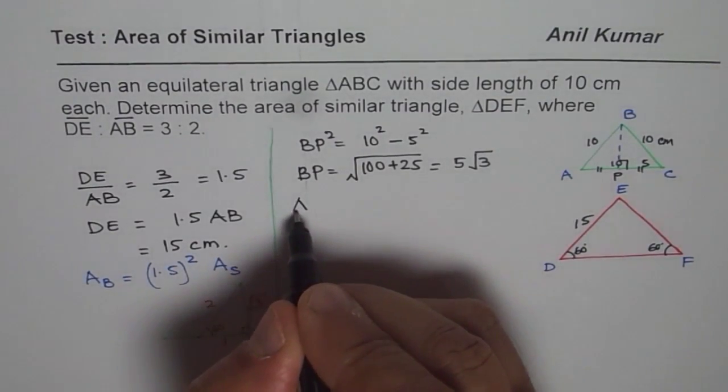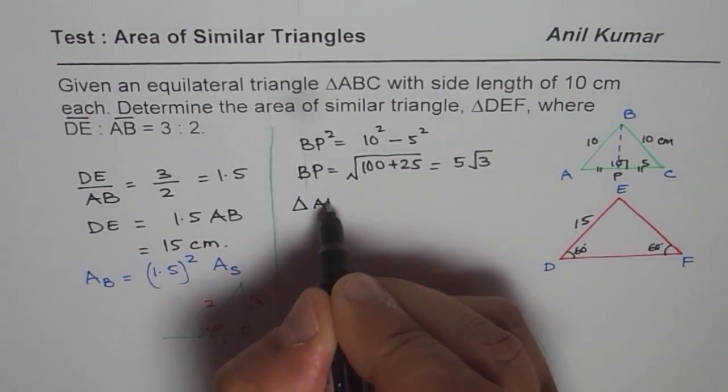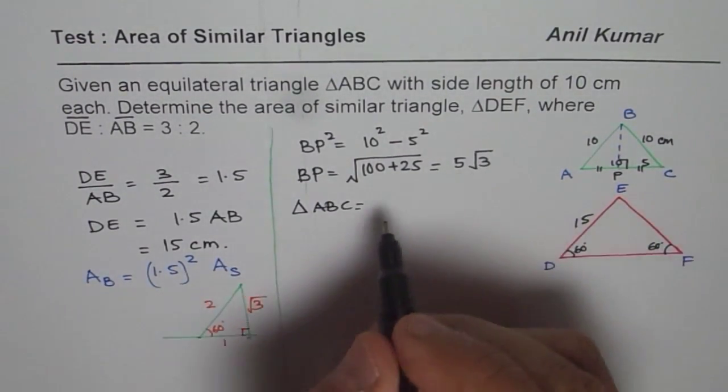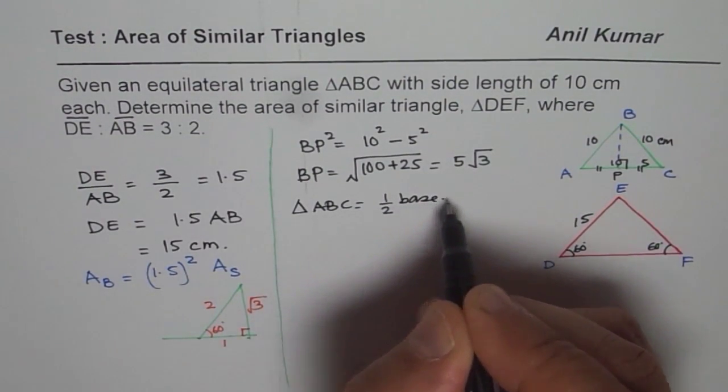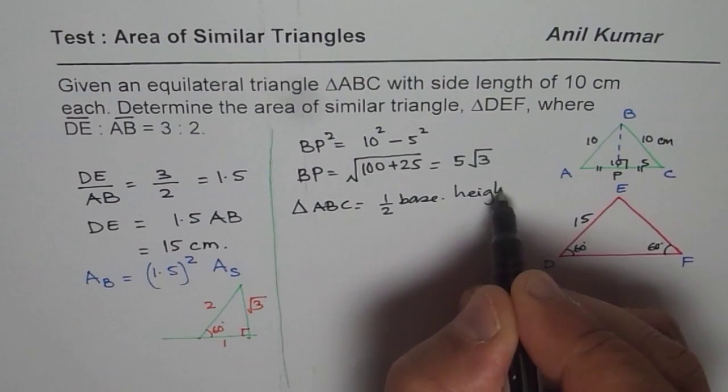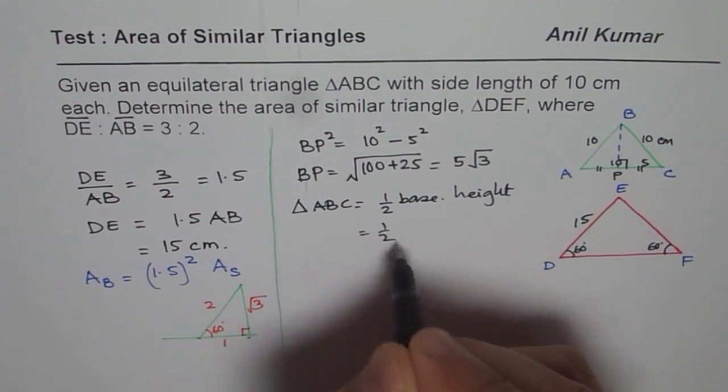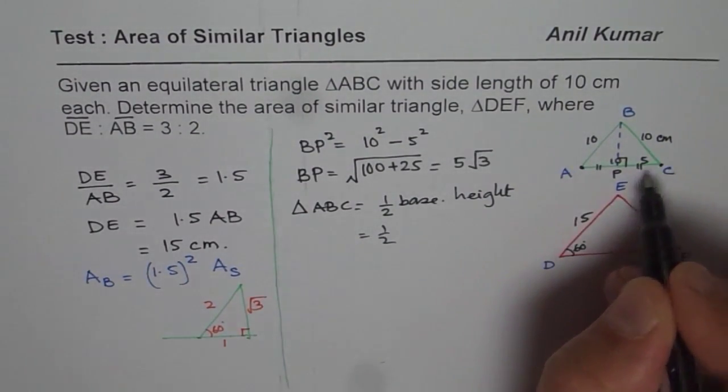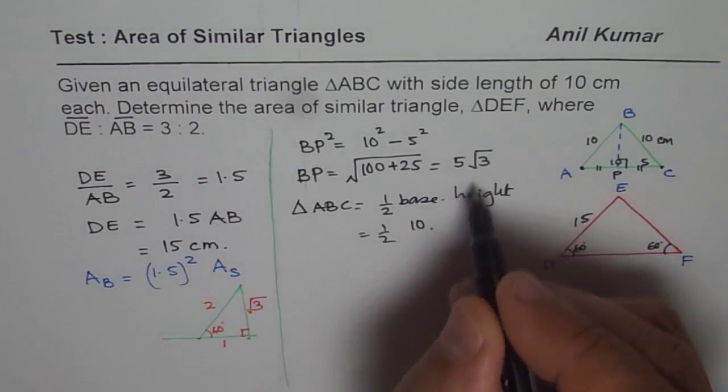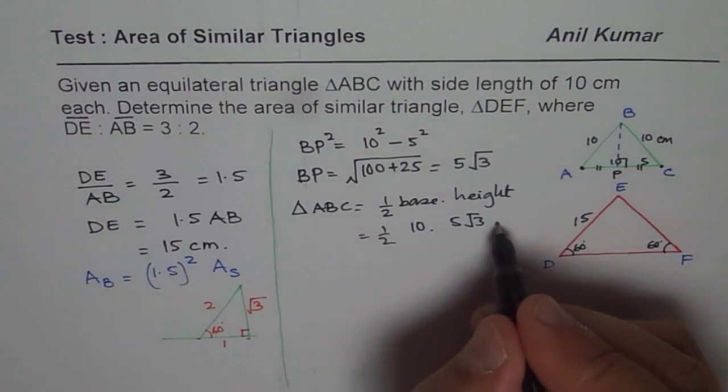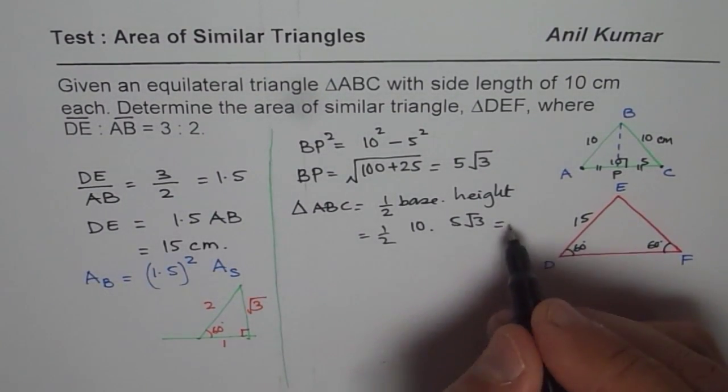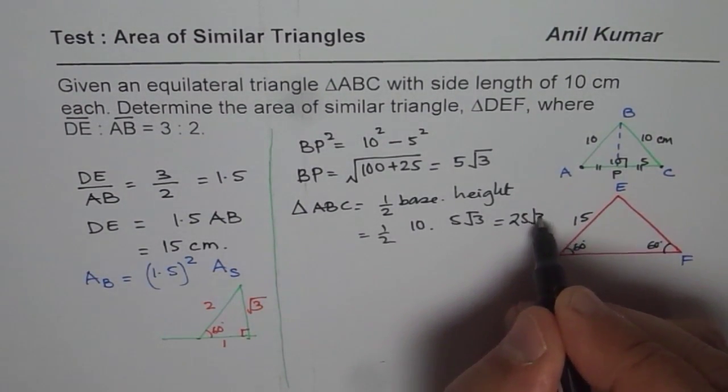Now the area of triangle ABC is how much? Area of triangle ABC is half base times height. Base is how much? Let me write base and height first. So we have area is half base, from A to C, which is 10, and height is 5 square root of 3. So that becomes our area, and that could be written as 5 times 5, 25 square root 3 centimeters squared, of course.